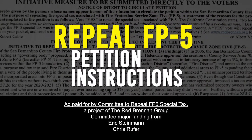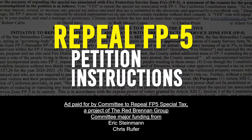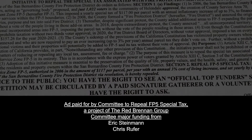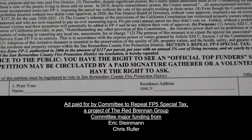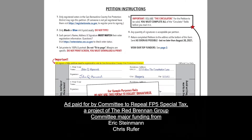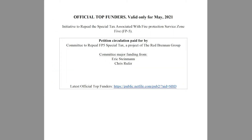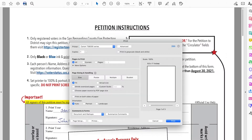Thank you for downloading the Repeal FP5 petition form. This document has three pages. The first page is the instructions, the second page is the official petition, and the last page is a disclosure list of our top funders.